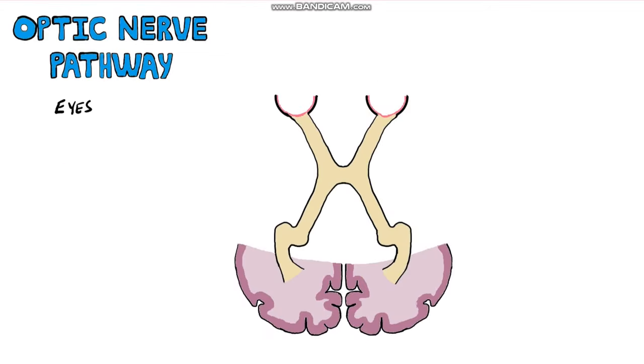Let's start with the normal situation. Here we have the eyes, more specifically the retina that houses the photoreceptors and the neurons.